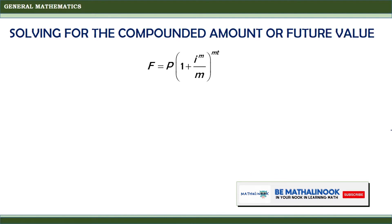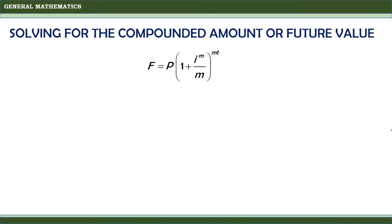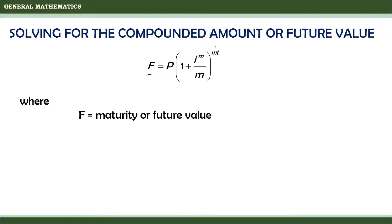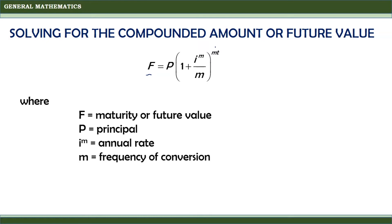Let us discuss how to solve for the compound amount or future value. Sometimes the future value is also called the maturity value. The future value F is solved using the formula F equals P times quantity 1 plus I(M) divided by M, raised to M times T. Where F is the maturity value, P is the principal, I(M) is the annual rate, M is the frequency of conversion, and T is the term in years. Sometimes I(M) can be represented by the letter R.